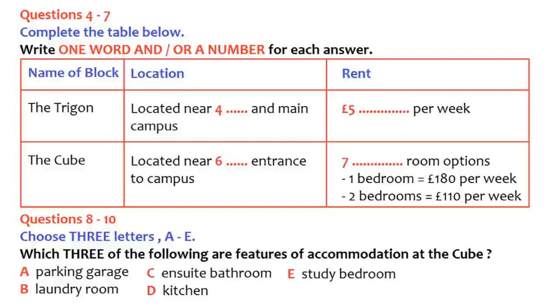However, for postgraduate students, there are other options. And what are they? There's another apartment block called The Cube, located near the west gate of the campus. Accommodation there is in one or two bedroom self-contained flats.